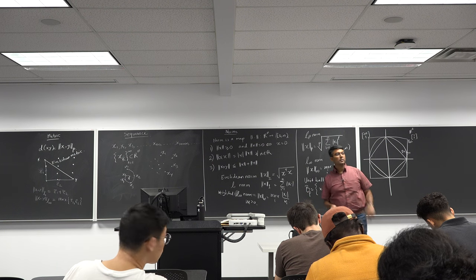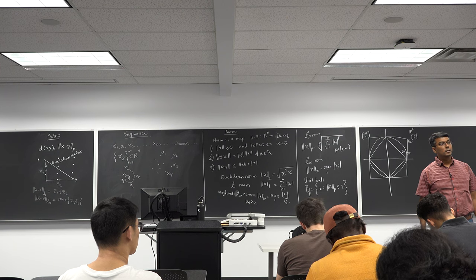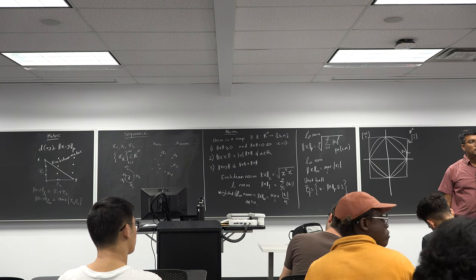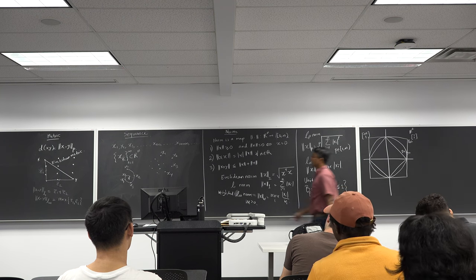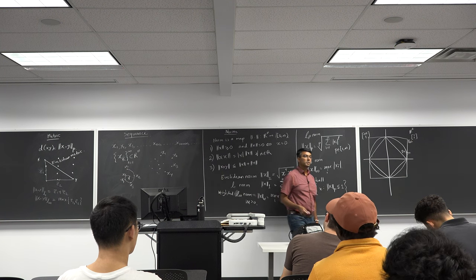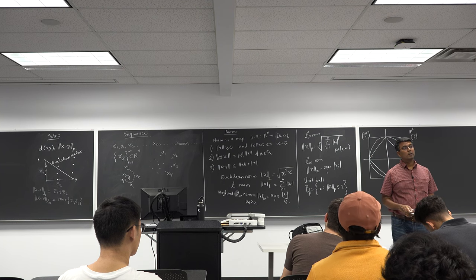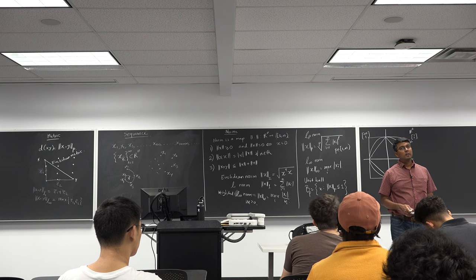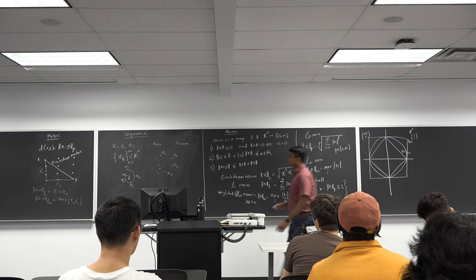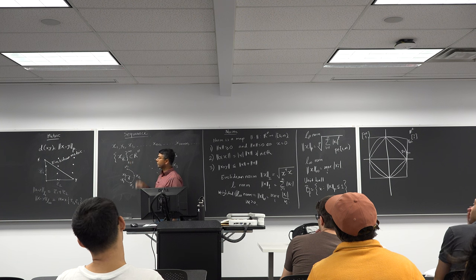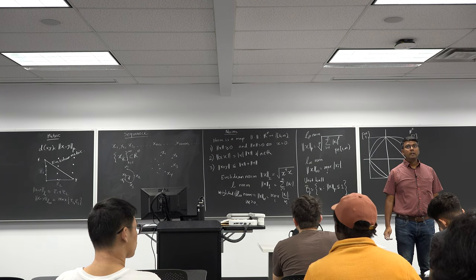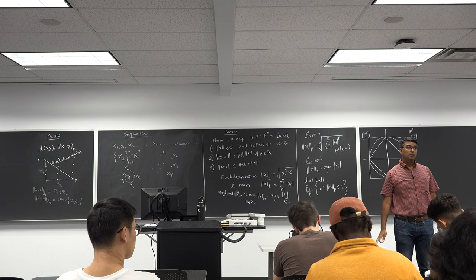The mathematical definition of a sequence requires k to go from 1 to infinity — you have an infinite number of points. A finite set of points is not a sequence by definition; you can't talk about convergent properties in that case.